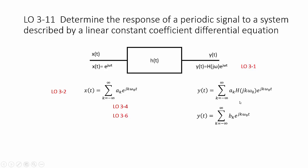We can take this output, and we can combine the a sub k and the h of j k omega terms, and call it a b sub k, because they're both dependent on k. b sub k is just another name, and that b sub k is the product of a sub k and h of j k omega 0. We're going to use that a lot in this learning outcome.